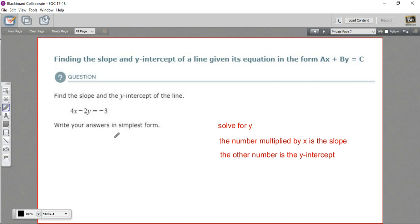That slope-intercept form has y on one side and something multiplied by x on the other side, and maybe some other number added or subtracted. And when you have it in this form, this is slope-intercept form, this is the slope. So it's pretty easy if you've got it in that form. And this is your y-intercept.